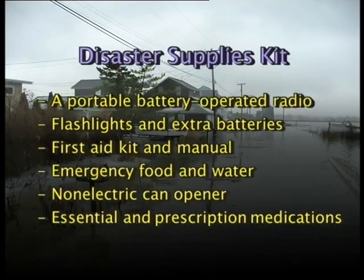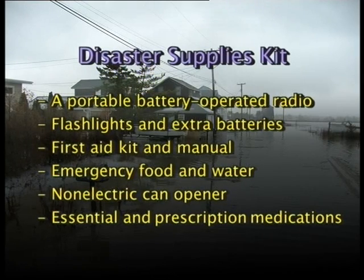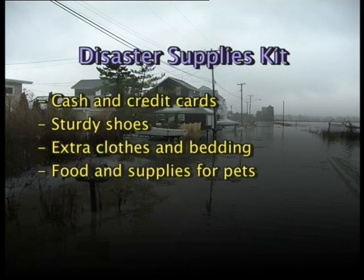You can prepare for flooding and other disasters by assembling a disaster supply kit. Take this kit with you when evacuating. This kit may include a portable battery-operated radio and extra batteries, flashlights, extra first aid kit and manuals, emergency food and water, a non-electric can opener, essential prescription medications, cash and credit cards, sturdy shoes, extra clothes and bedding, and food supplies for pets.